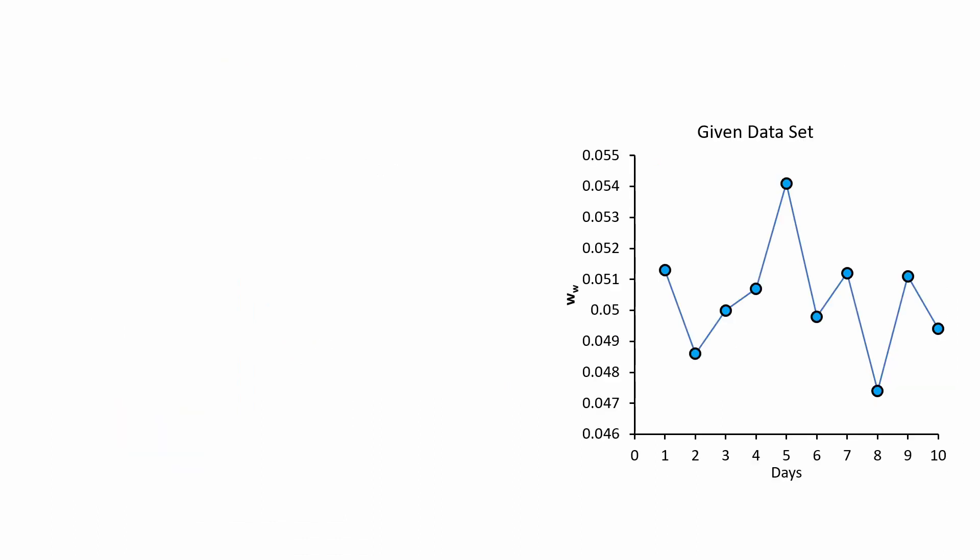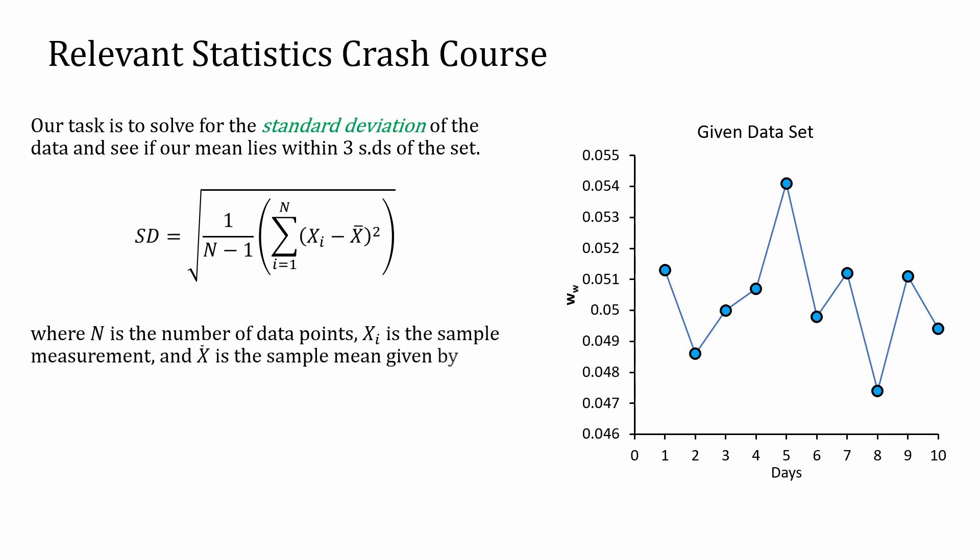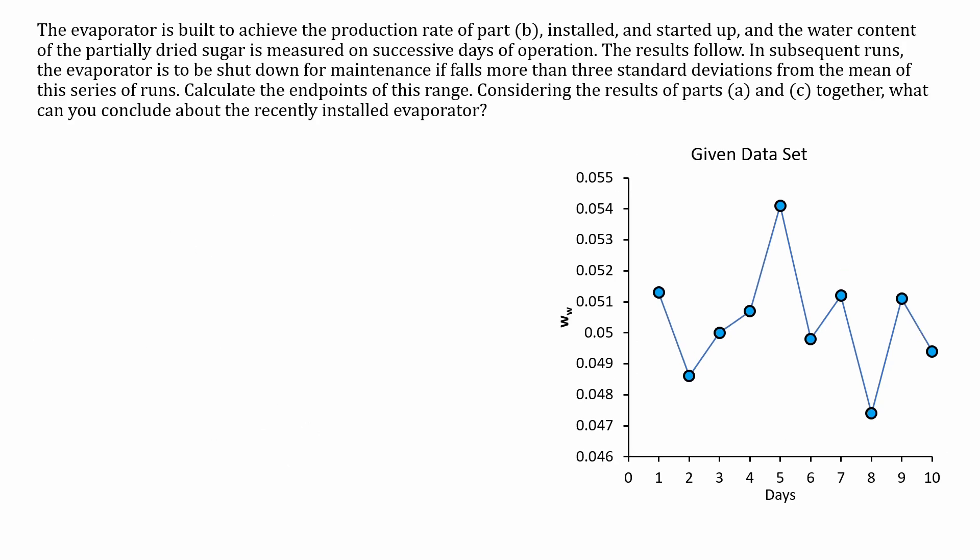So here's the given data set that I plotted. Now I'm going to do a really quick crash course of the relevant statistics for this data set. Our task is to solve for the standard deviation of the data, and see if our mean lies within three standard deviations of the set. So standard deviation is this funky looking equation, where n is the number of data points, and xi is the sample measurement, and x bar is the sample mean. So the sample measurement is simply just the data points, and the mean, as we may know, is just dividing by the total number, and just taking the sum of each of the data points. So I'll show you how to do that on Excel now.